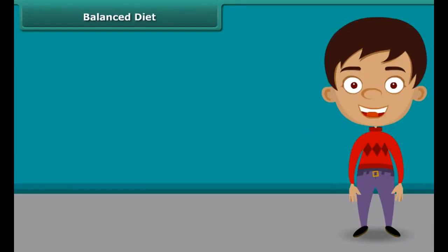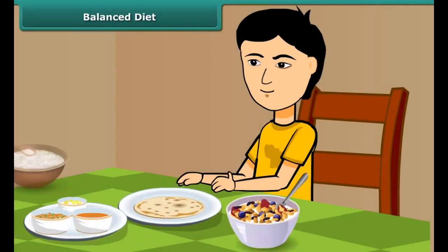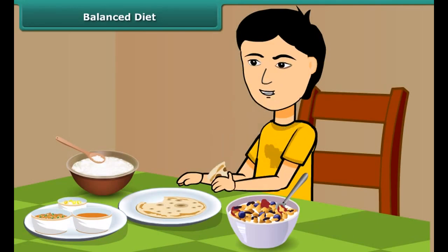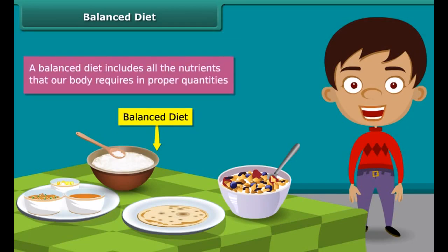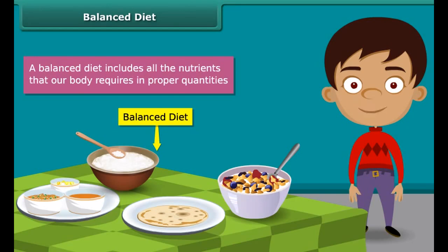As we know that all kinds of foods do not contain all the components, our meals should have a balance of the different nutrients that our body needs for growing and maintaining good health. Such a diet is called a balanced diet. In other words, a balanced diet includes all the nutrients that our body requires in proper quantities. Having a balanced diet is the best way to live a healthy life.